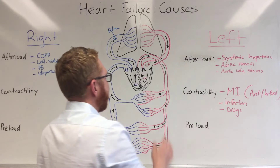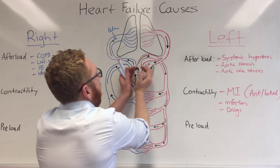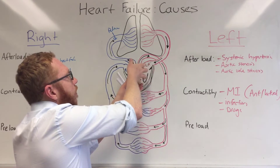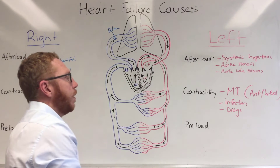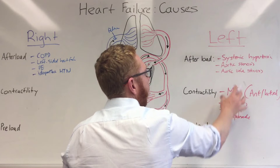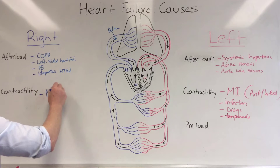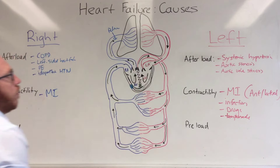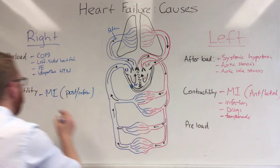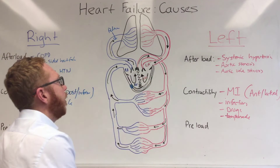Another contractility cause involves the outer sac of the heart — the pericardium. If it gets inflamed, pericarditis, the heart can't expand well to fill with fluid. Or if the pericardium fills with blood pressing back against the muscle — that would be cardiac tamponade. All of these apply to the right side as well: an MI on the right side is usually a posterior inferior infarct, but tamponade and pericarditis can also impair the right side's ability to pump.